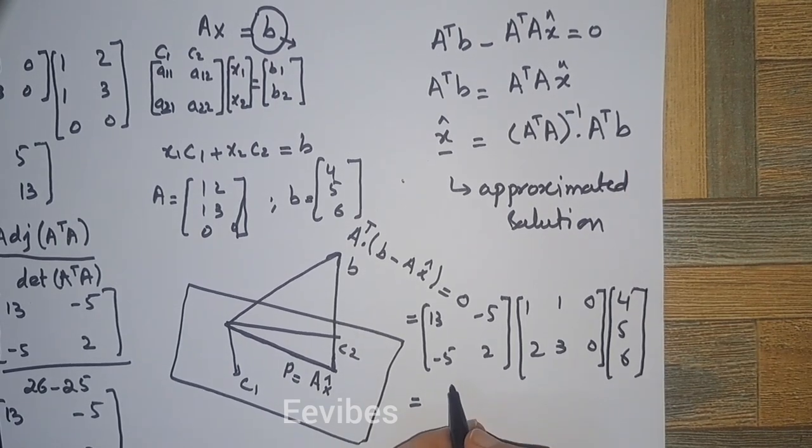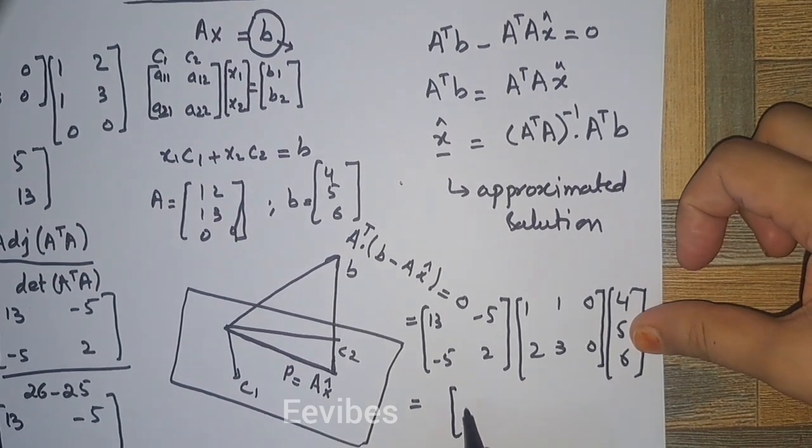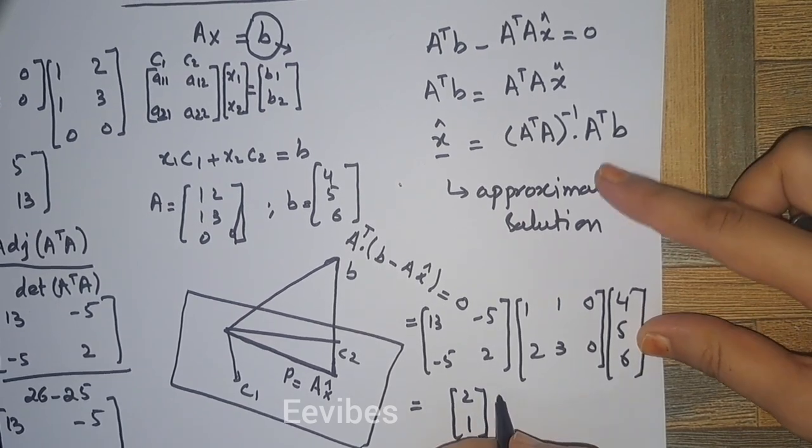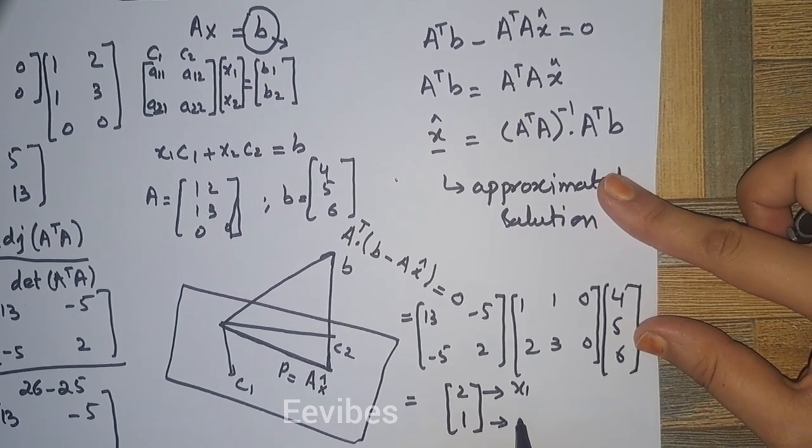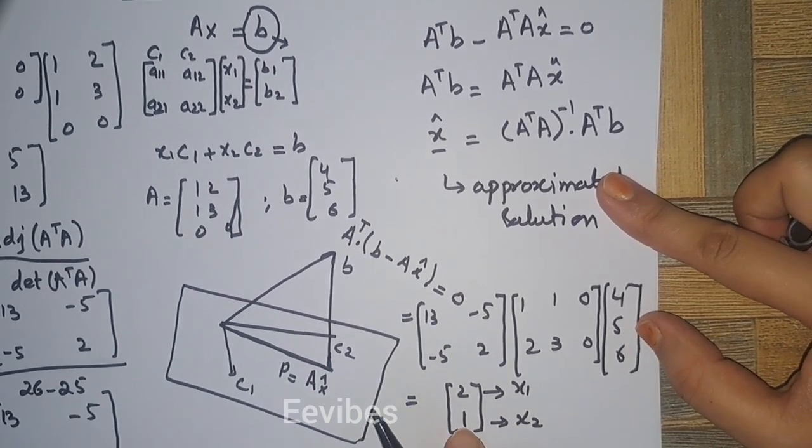When you simplify this matrix product, you are going to get [2, 1]. So from here you can say that x1 is equal to 2 and x2 is equal to 1.